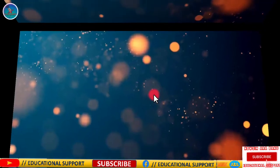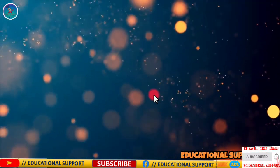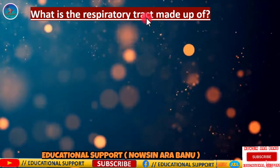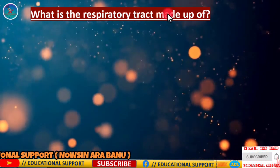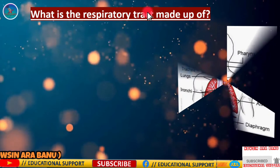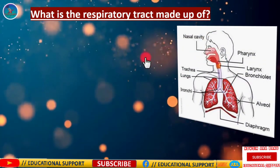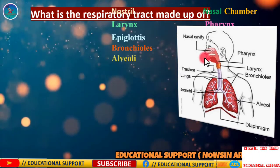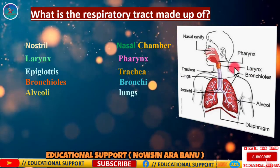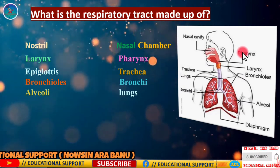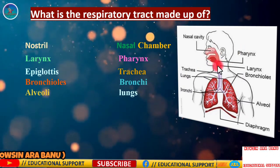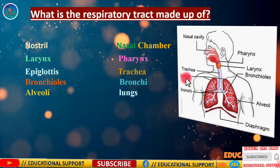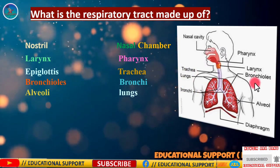The respiratory tract is made up of the nostril, nasal chamber, larynx, pharynx, epiglottis, trachea, lungs, bronchi, and bronchioles.